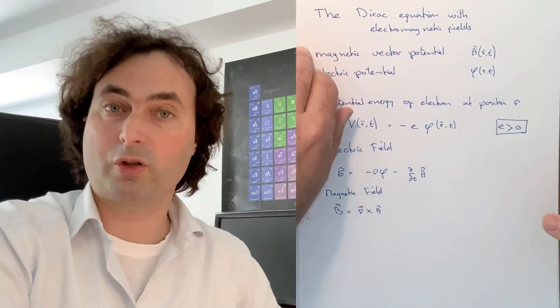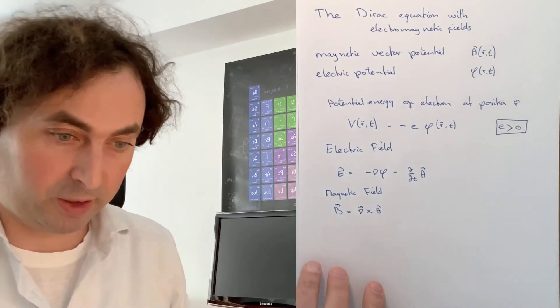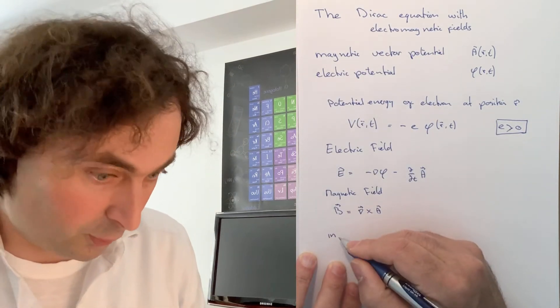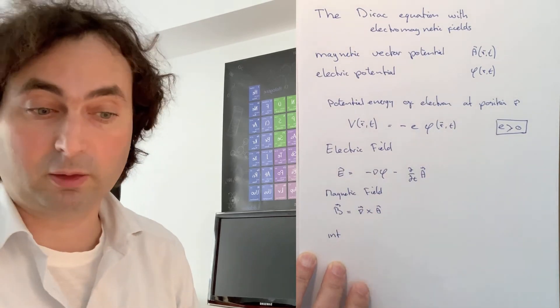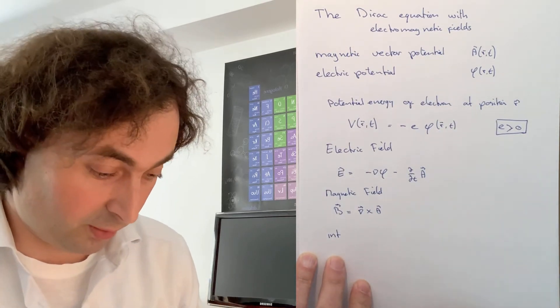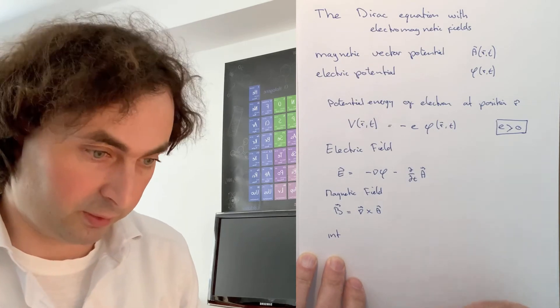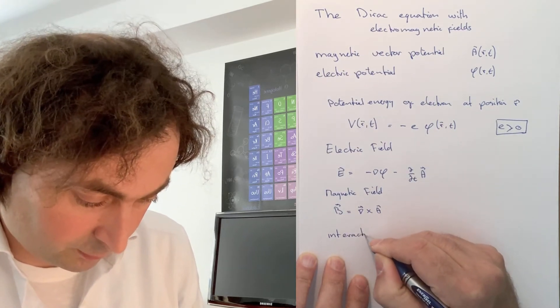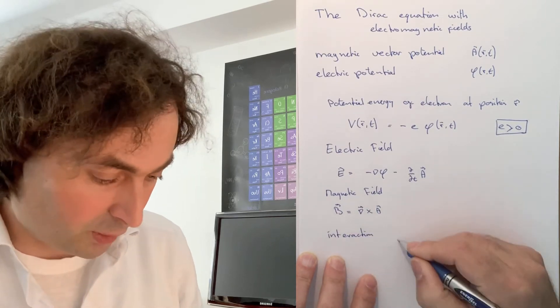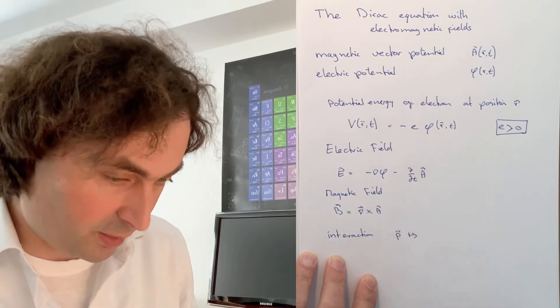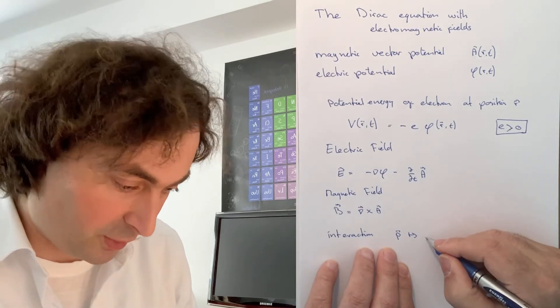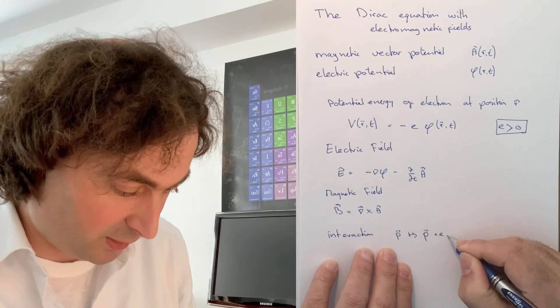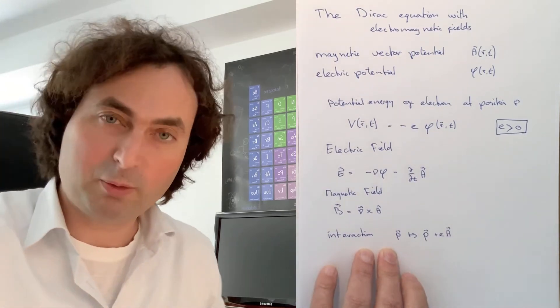So far we are just doing classical electromagnetics, and we can also follow classical electromagnetics to now introduce the interaction between an electron and the electromagnetic field. What you have seen in classical electrodynamics is that you can replace the momentum by the momentum plus e times A.